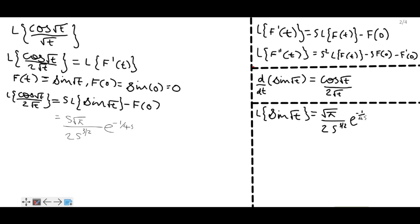We can write the Laplace transform of cos(√t) / (2√t) as (1/2) times the Laplace transform of cos(√t) / √t. Then multiply both sides of the equation by 2. So the Laplace transform of cos(√t) / √t is equal to √π / s times e^(-1/4s).